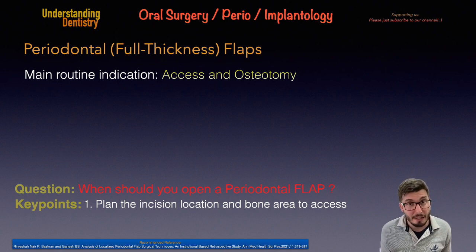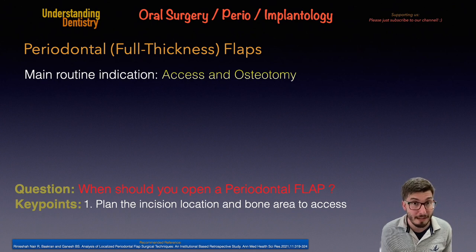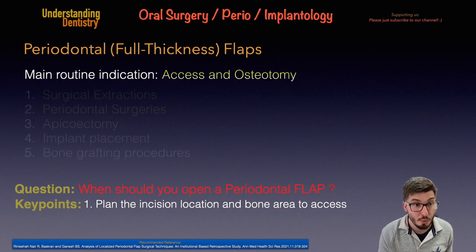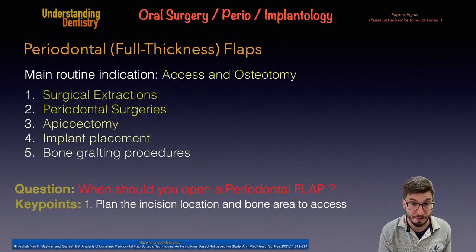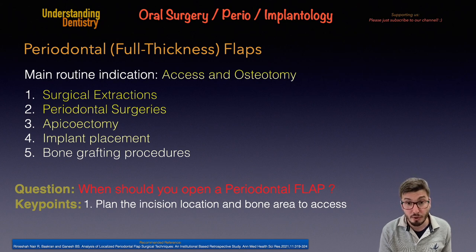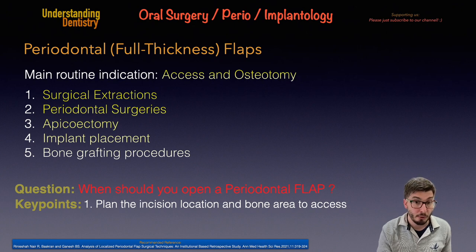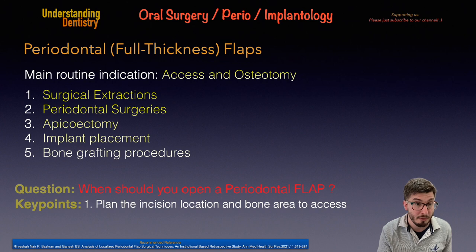The five most common clinical and surgical procedures where you might need to open a flap are: surgical extractions, where you need to get access to the tooth or perform an osteotomy; and periodontal surgeries, where you might want to get access to a defect, for example.